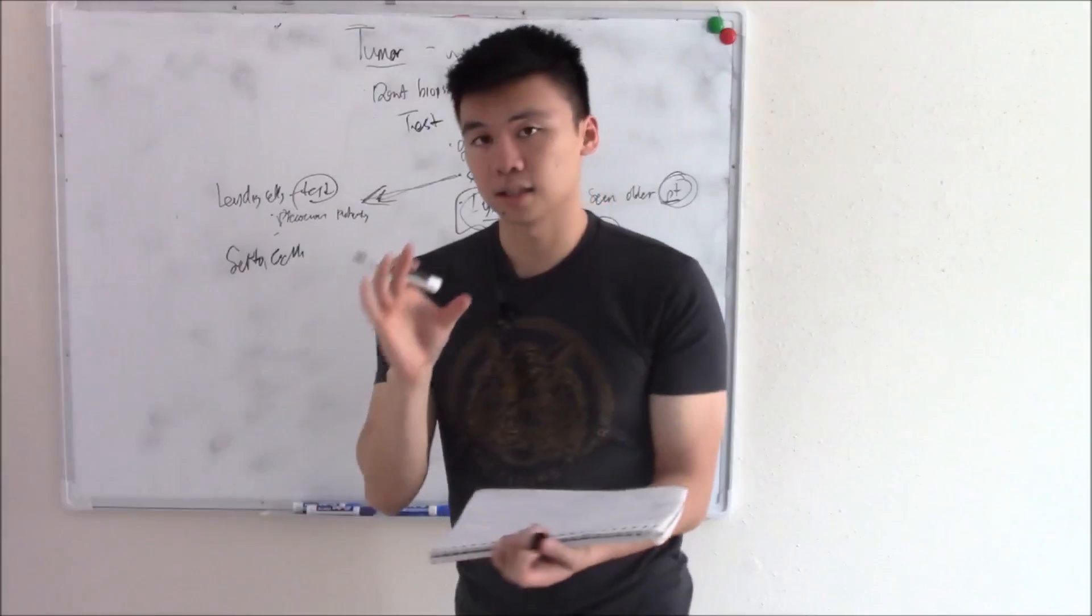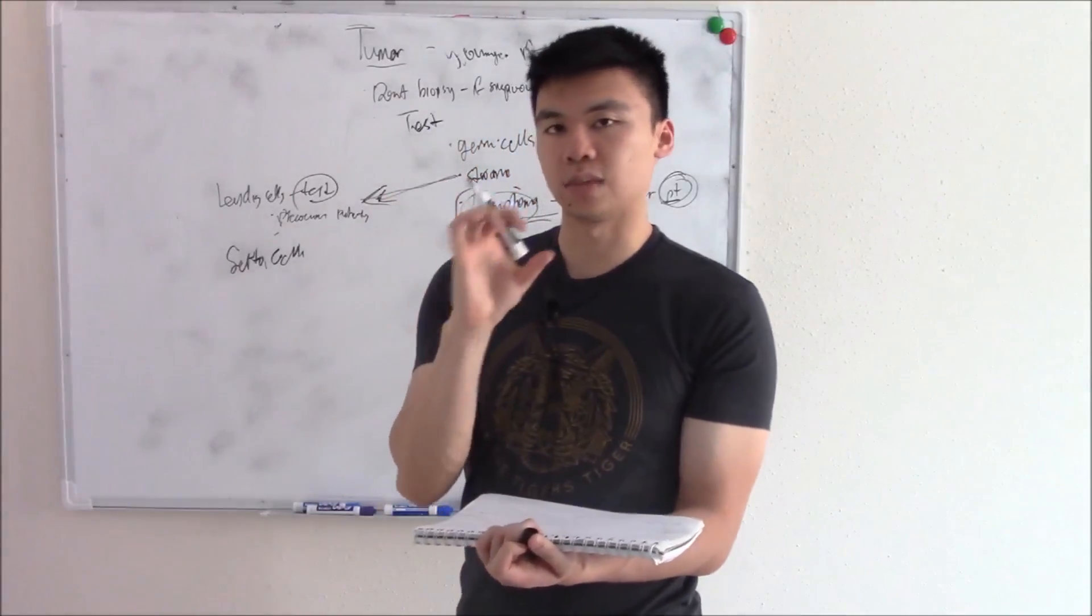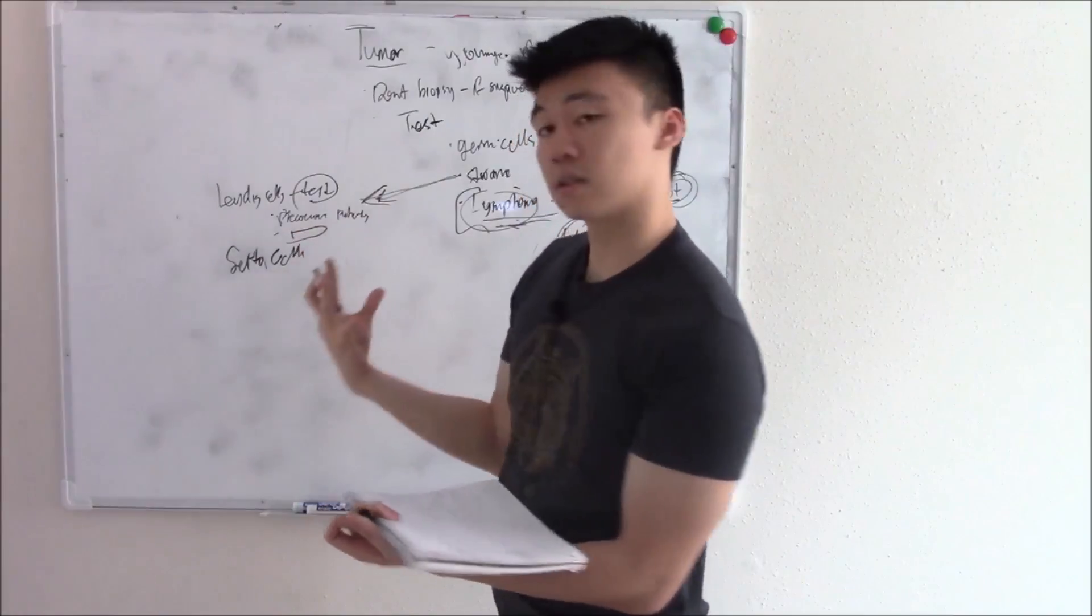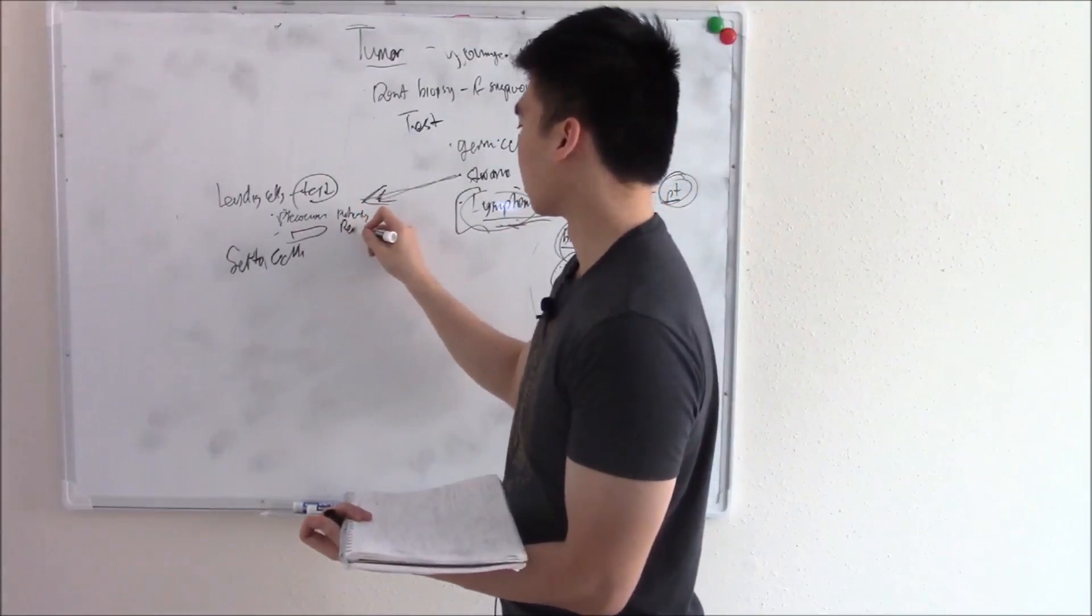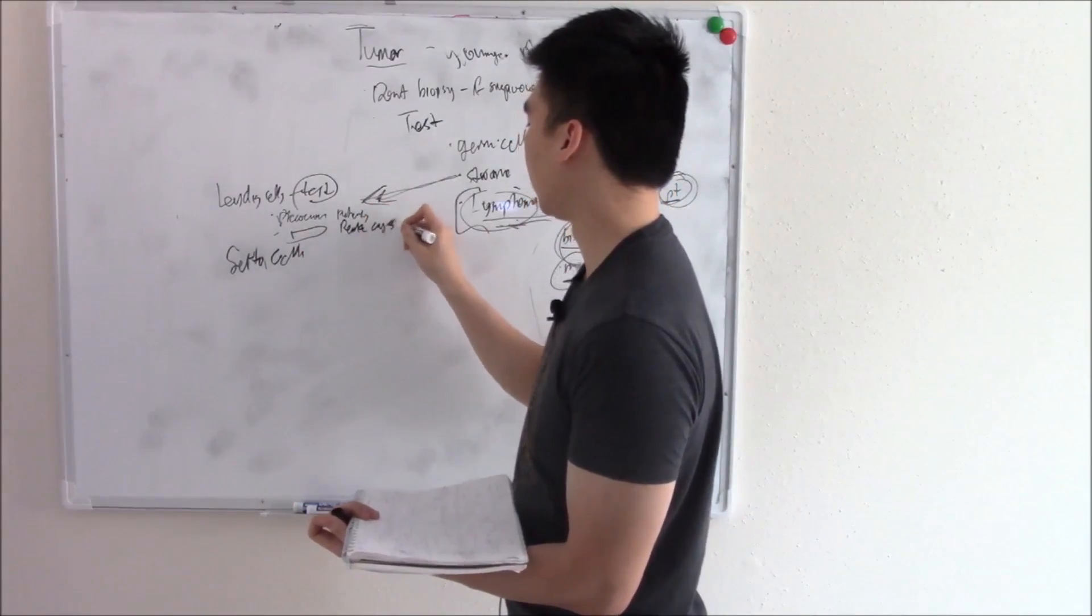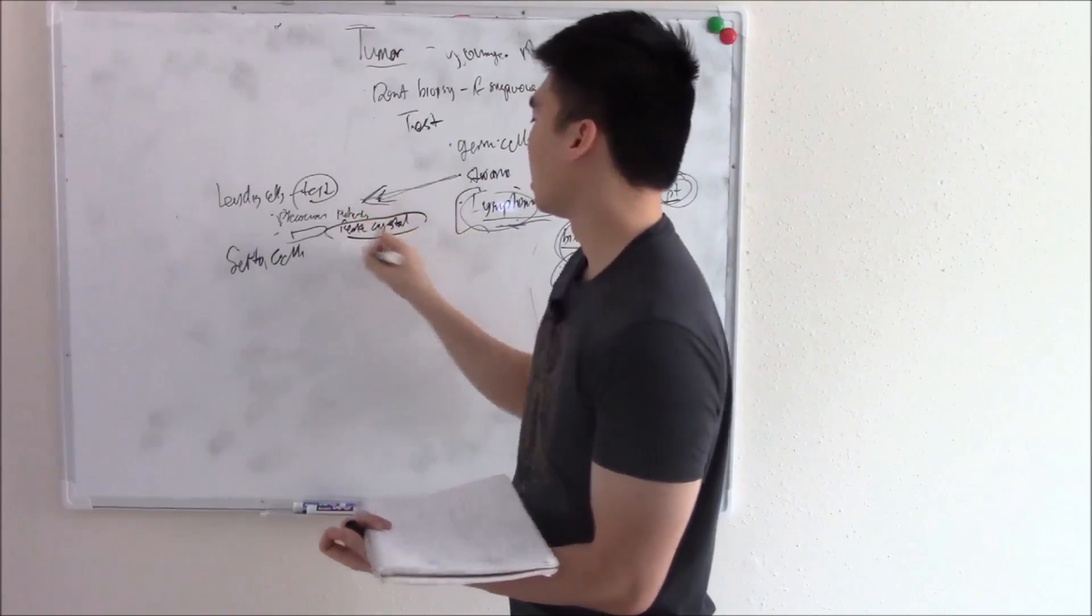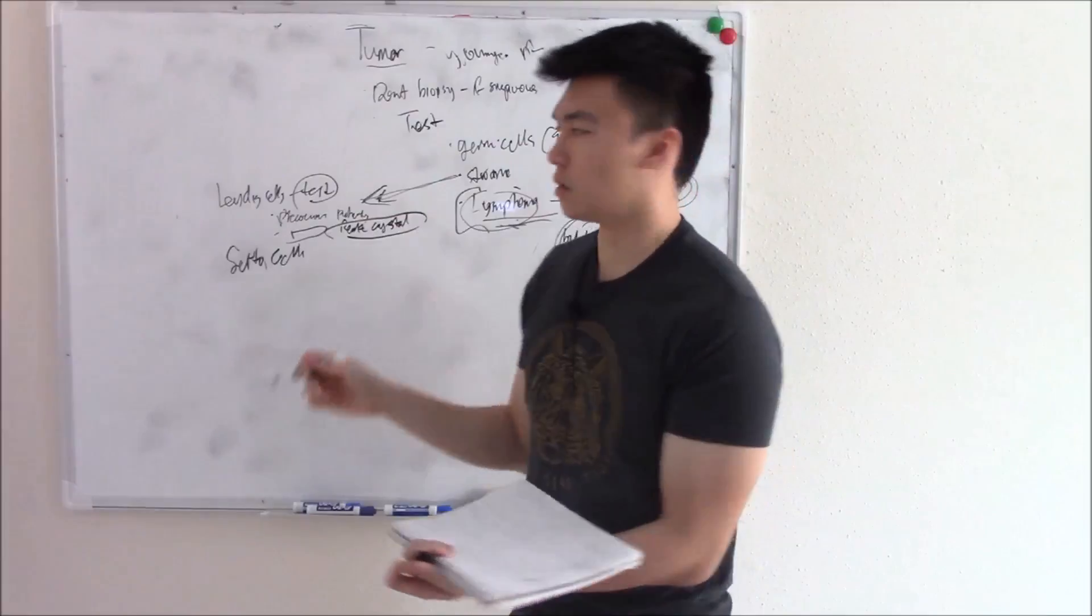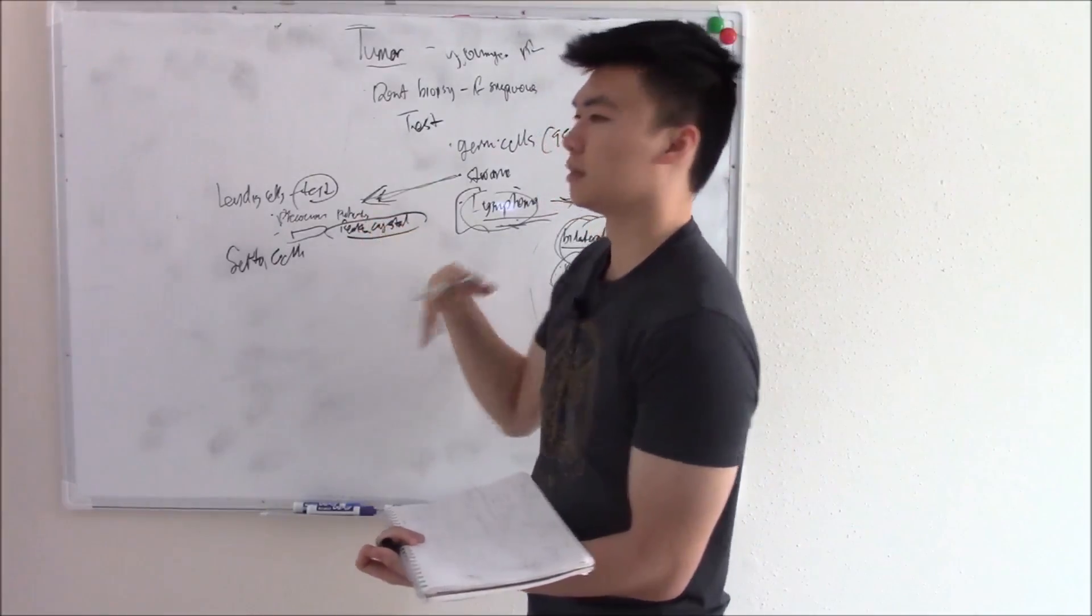One other thing you're going to see is these intracytoplasmic inclusions that look rectangular. These little crystals, we call those Reinke crystals. Very, very pathognomonic. A picture is in my notes. Recognize that well because they can just show you that crystal testicular mass. What is it? That's a Leydig cell tumor.